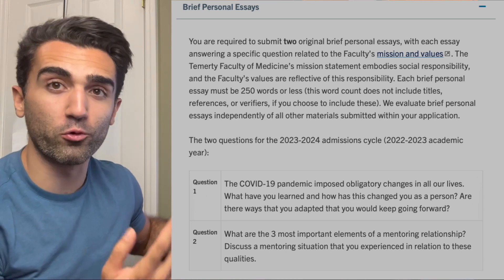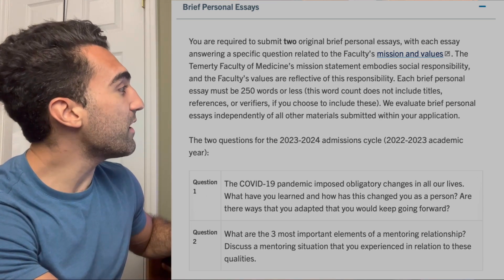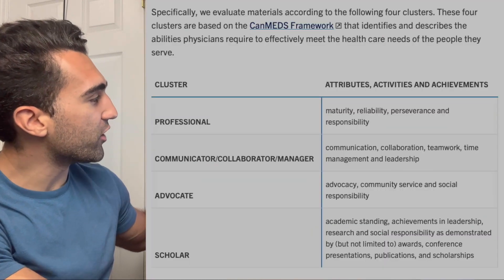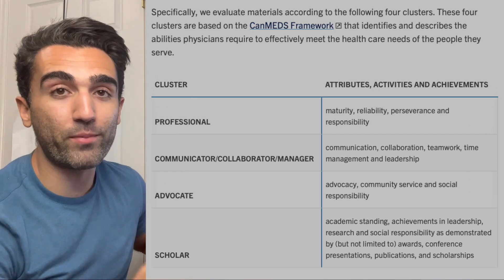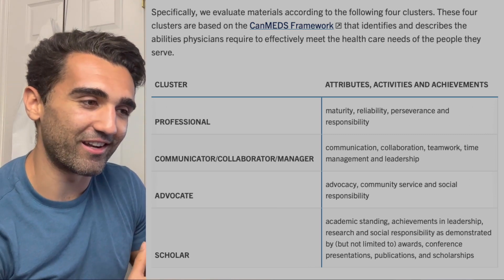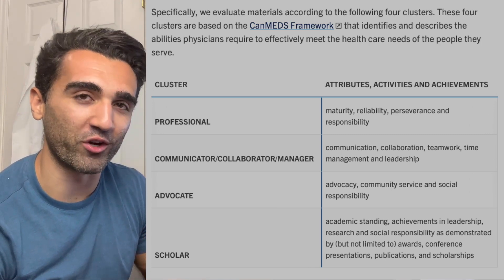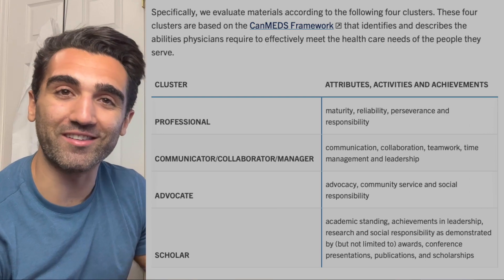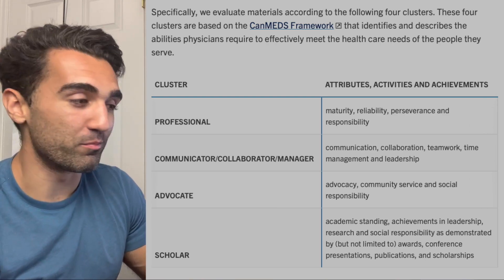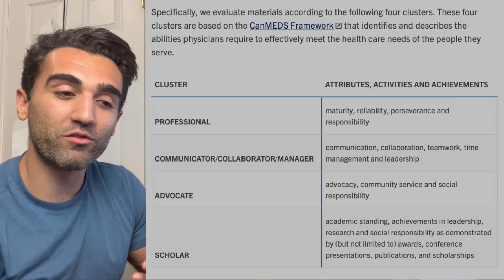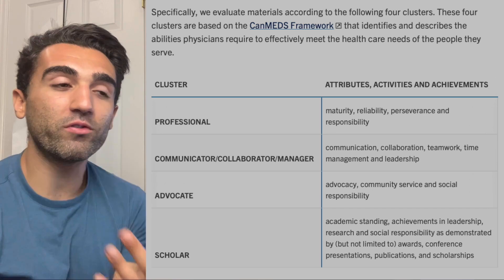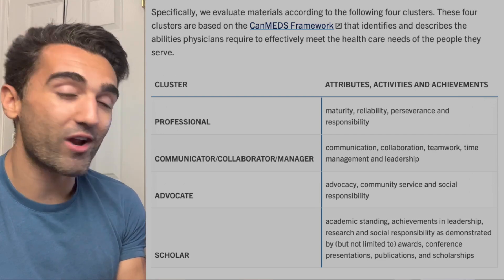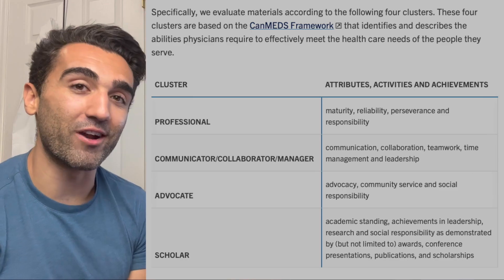U of T pays very close attention to their clusters when evaluating essay responses. The four clusters — professional, communicator, advocate, and scholar — are based on the CanMeds roles. Here in Ontario and Canada, the CanMeds roles are a crucial buzzword. If you don't know what the CanMeds roles are when applying to medical school, you're at a great disadvantage. I'll link that in the description below. These are qualities supposed to be embodied by Canadian physicians, and U of T asks that you try to incorporate them into your answers if possible.